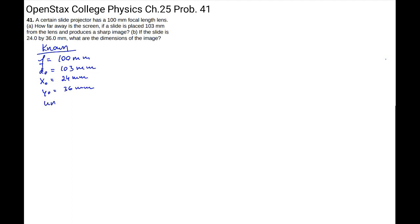And for our unknowns, we are looking for the image distance first. We want to know where the screen is so that the image is formed clearly sharp on the screen. And then we want the dimensions of the image, the dimensions of the slide, X image and Y image. So these are the three things that we're looking for.